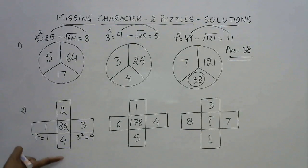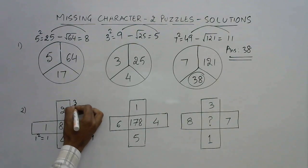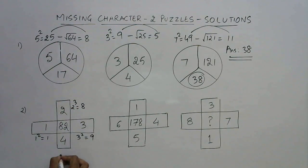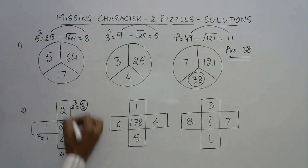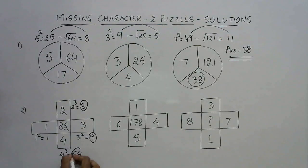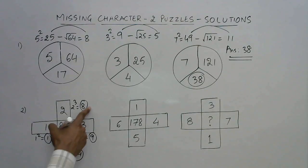And take the cubes of the numbers on the top and the bottom. 2 cube is 8 and 4 cube is 64. And now if you add these numbers: 8, 9, 64, and 1.